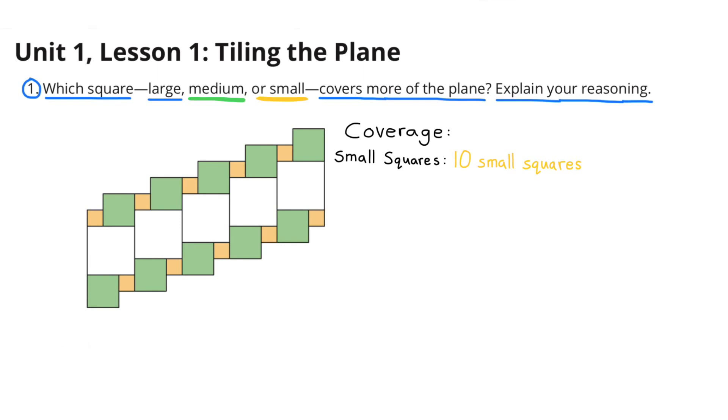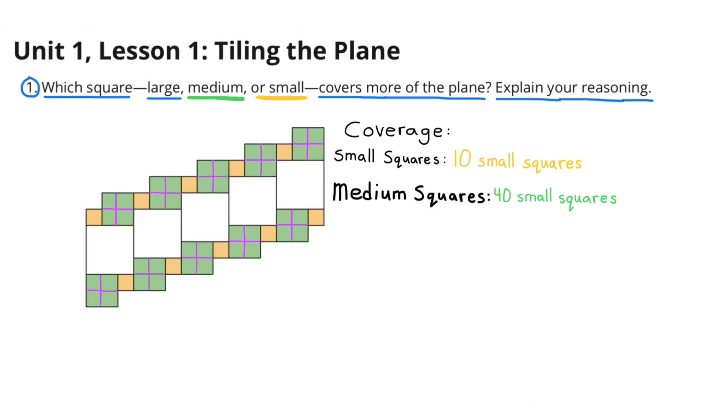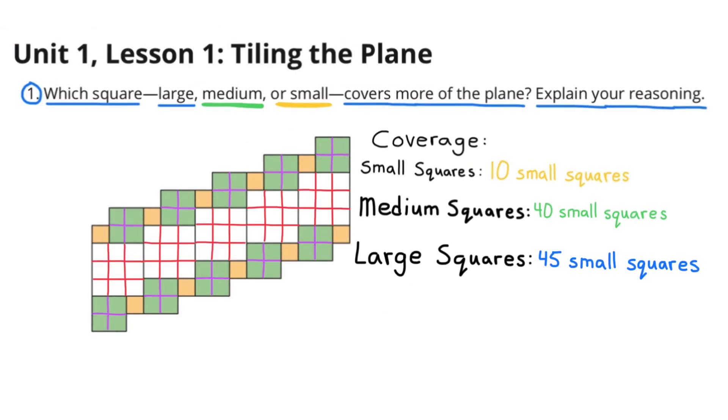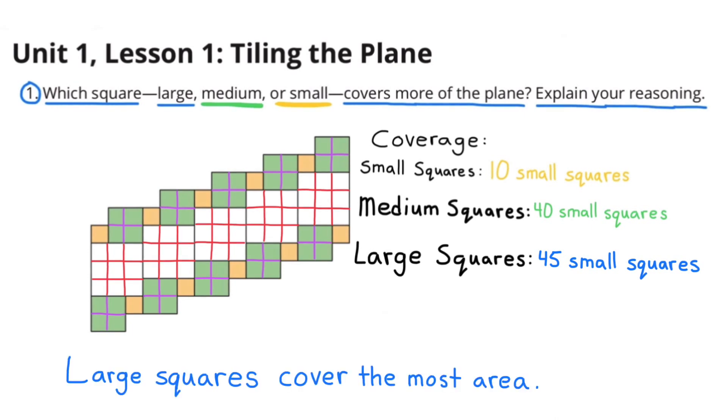For the small squares, they cover 10 small squares. The medium squares cover a total of 40 small squares. And the large squares cover a total of 45 small squares. The large squares cover the most area.